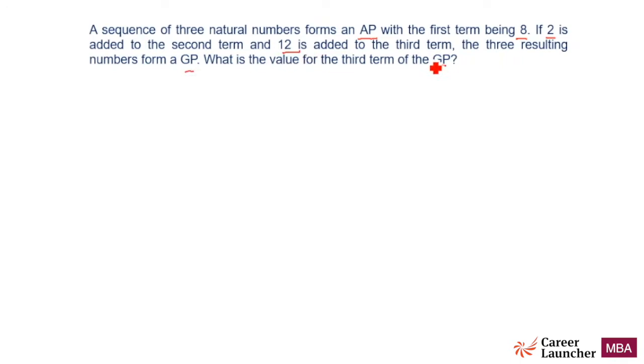The question says the first term in an arithmetic progression is 8. Obviously, the second term will be 8 plus D and the third term will be 8 plus 2D.